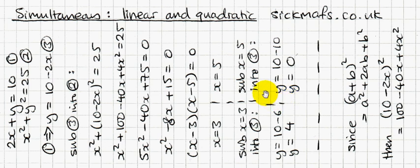So that's it. You've got your answers. x equals 3 and y equals 4 is one pair of answers. They go together. And x equals 5 and y equals 0 is another pair of answers that go together.